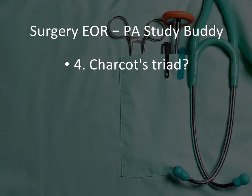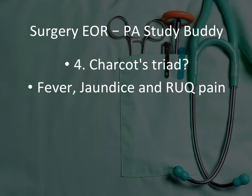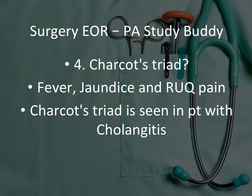What is Charcot's triad? One of the things you should really focus on during your studies is knowing all the triads and syndromes, because they're easy to make questions around. Charcot's triad is fever, jaundice, and right upper quadrant pain, and this is seen with cholangitis. If a patient has fever and complains of right upper quadrant pain, think cholangitis — that is Charcot's triad.